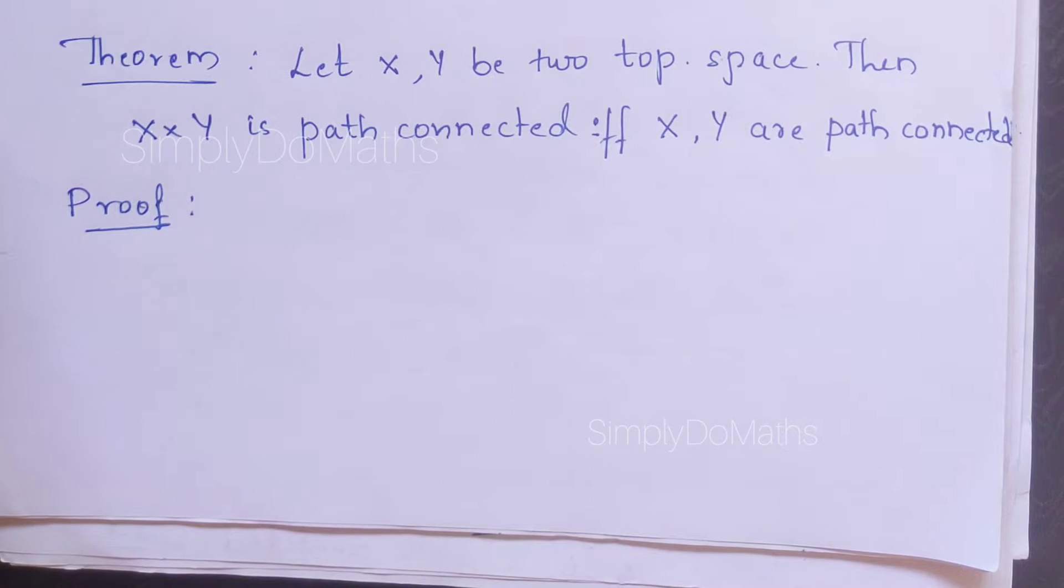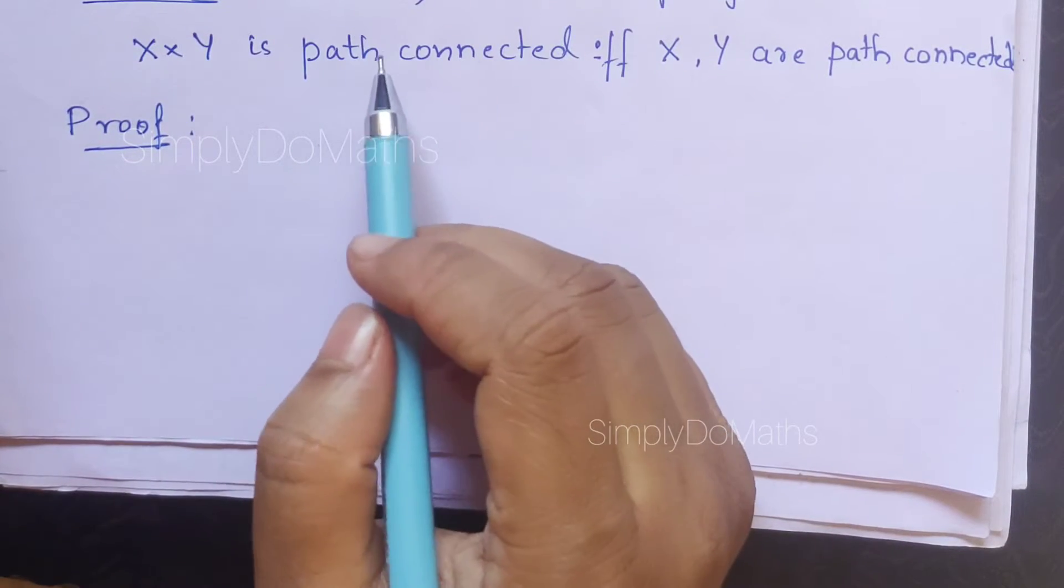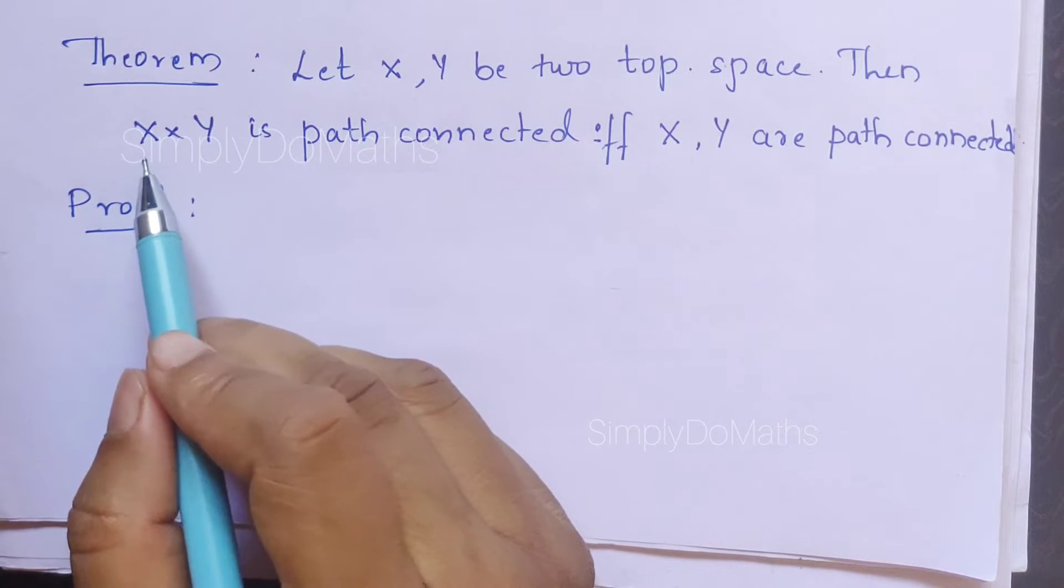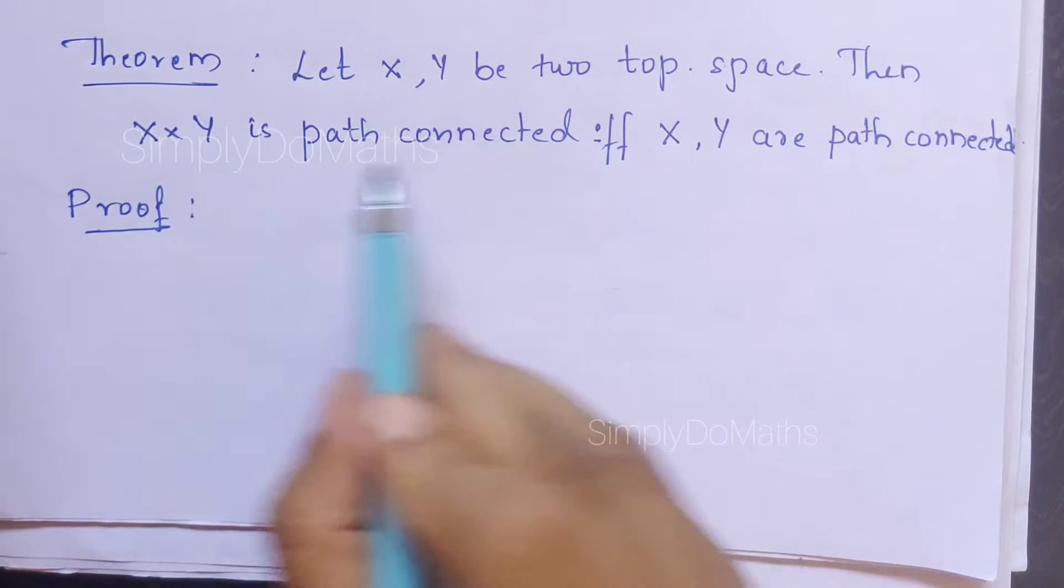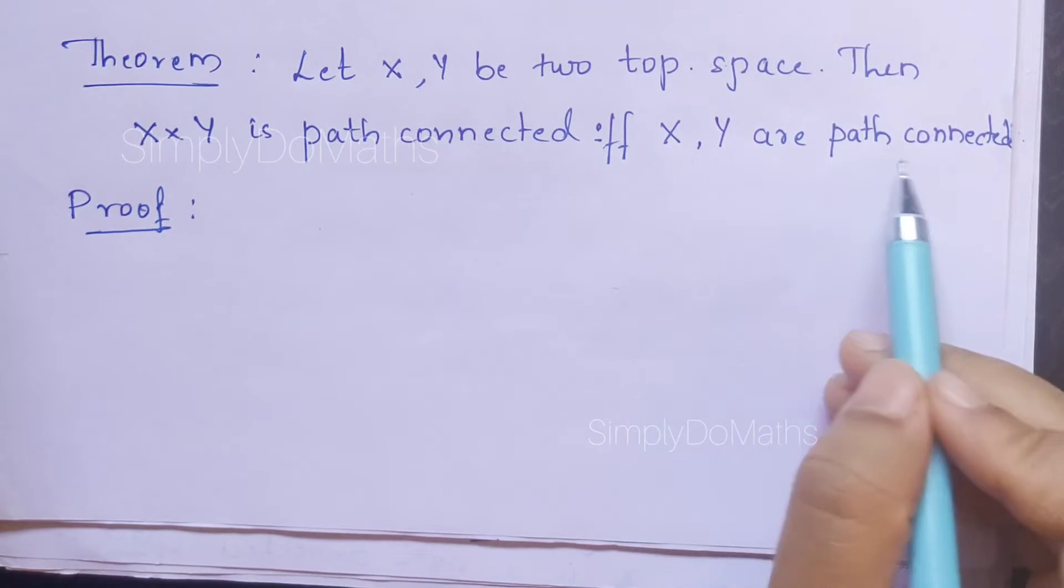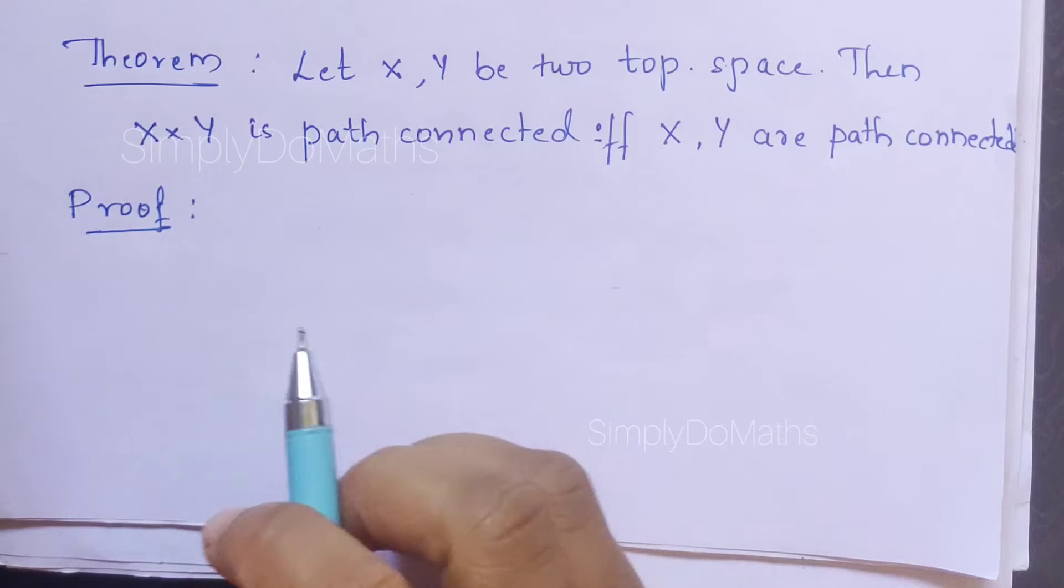We have a very important property of path-connected space from the point of examination. Let us derive that. The statement is: if we are considering any two topological spaces X and Y, then the cross product X×Y will be path-connected if and only if X and Y are path-connected. The same theorem we have proved in the concept of locally connected space. Similarly, we need to prove it in path-connected space also.